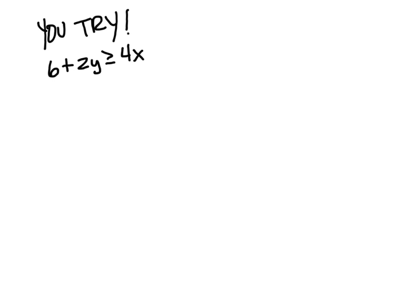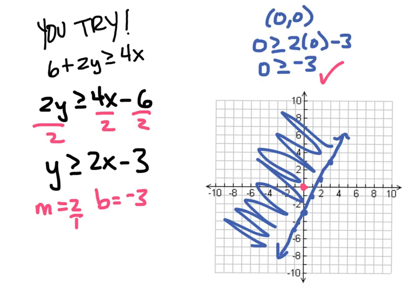Try graphing 6 plus 2Y is greater than or equal to 4X on your own, then we'll come back together. When you solve for Y, you get Y is greater than or equal to 2X minus 3 — slope of 2 and Y-intercept of negative 3. Start at negative 3, go up 2 over 1 repeatedly. Use a solid line because it's greater than or equal to. Testing (0,0): is 0 greater than or equal to negative 3? Yes — so we shade that side of the line. And that's how we graph linear inequalities.